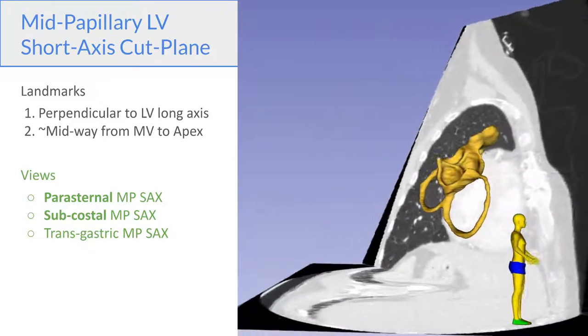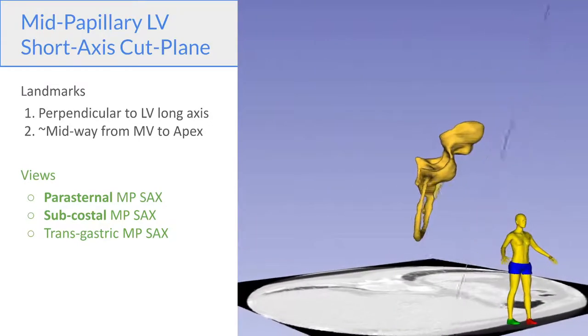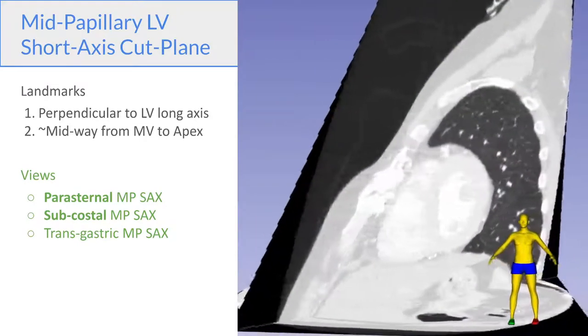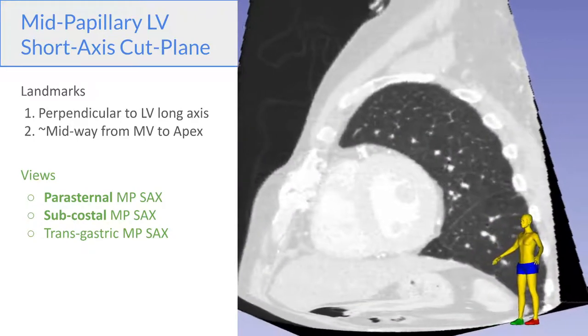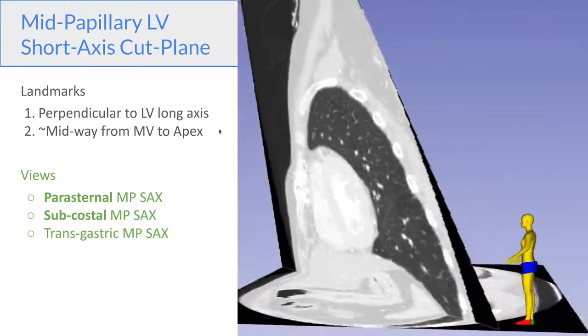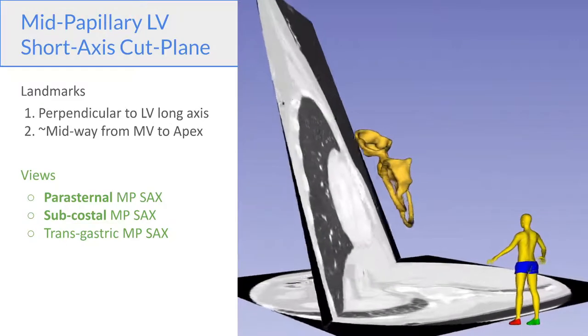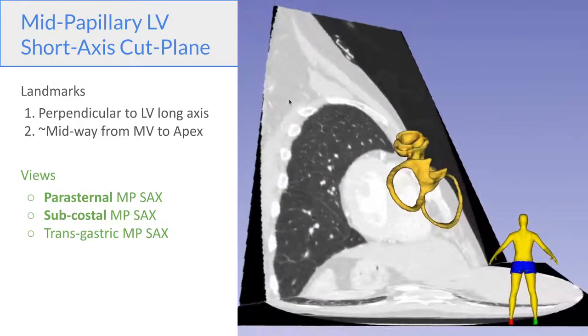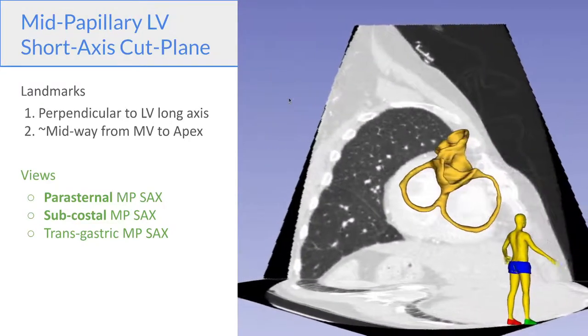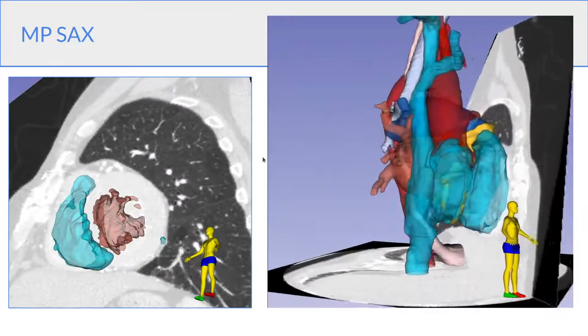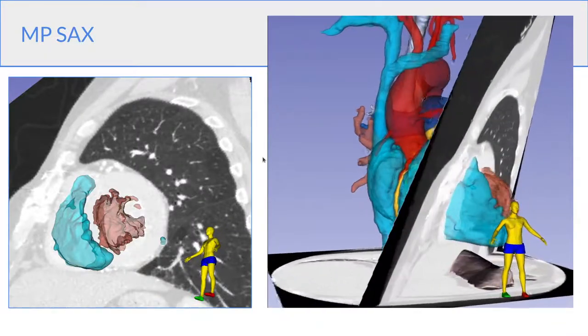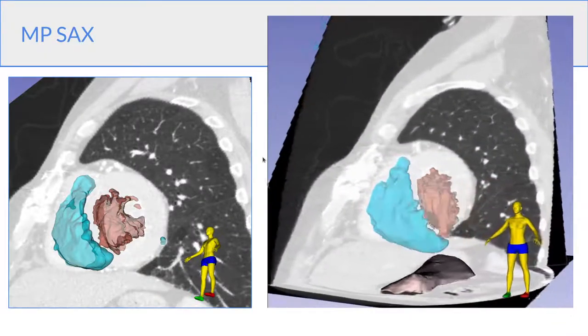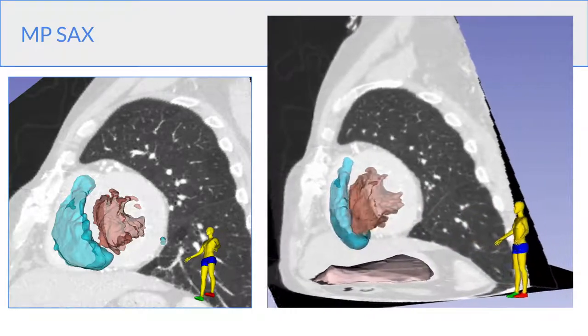This view is significant because at the mid-papillary level all three major coronary circulations are represented and you also have the least chance of having geometric distortions based on movements of the heart in and out of your scan plane.